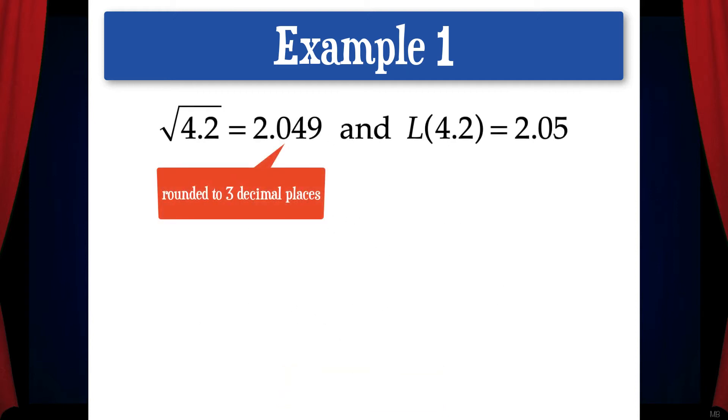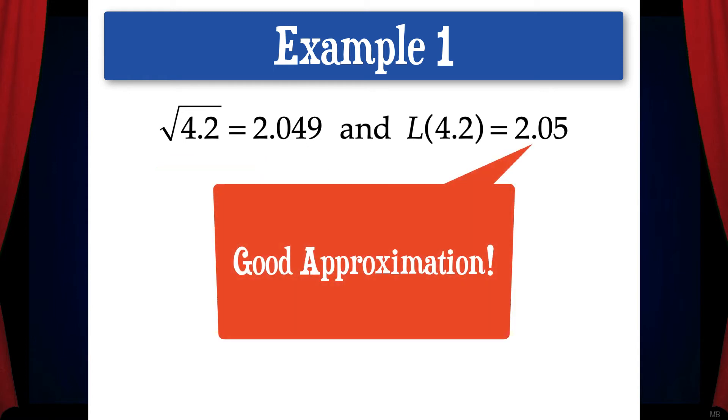Now the actual value of the square root of 4.2 equals 2.049 and L of 4.2 equals 2.05. Here we can see that L of 4.2 is a very good approximation of the square root of 4.2.